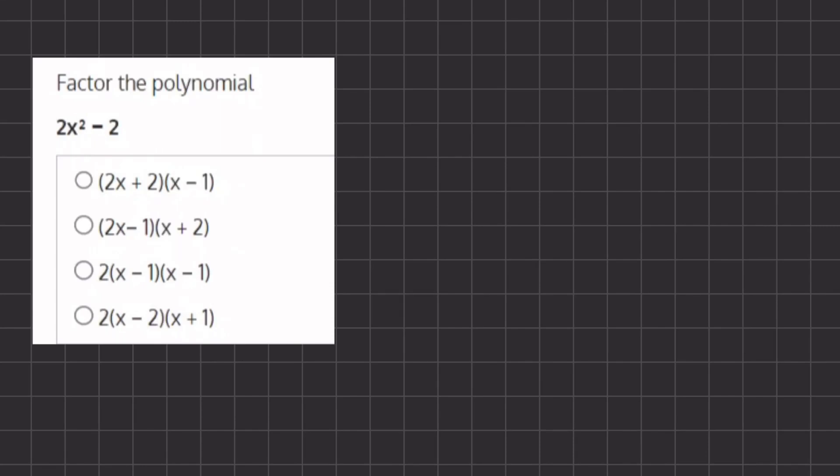In this problem, we are factoring this polynomial. The first step is taking a look at this polynomial and taking out a common factor. We can take out a common 2, and we are left with x squared minus 1.